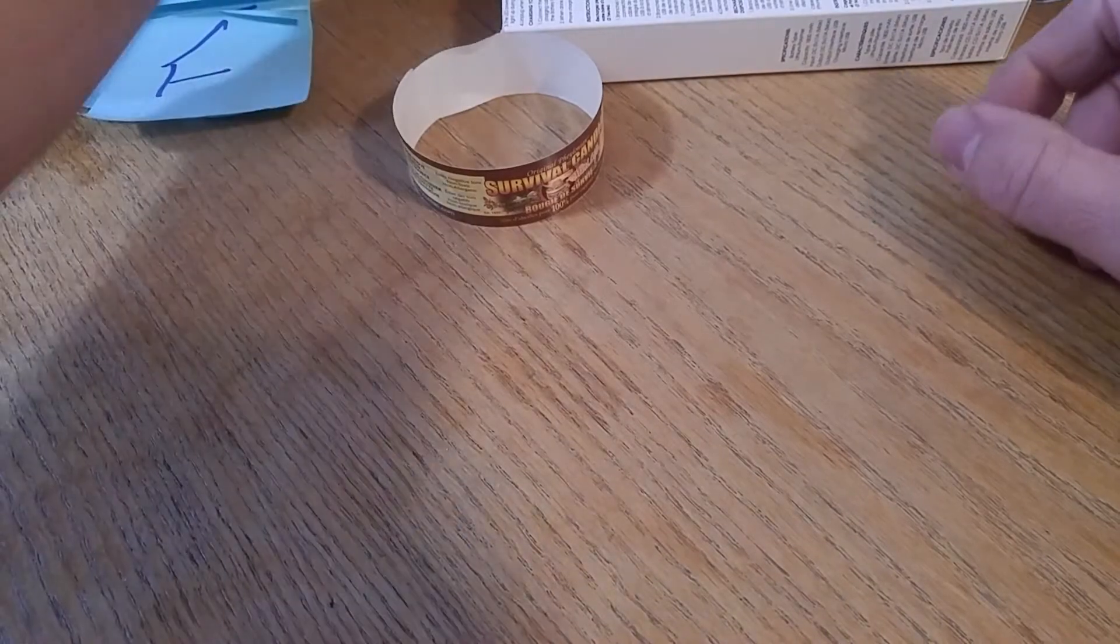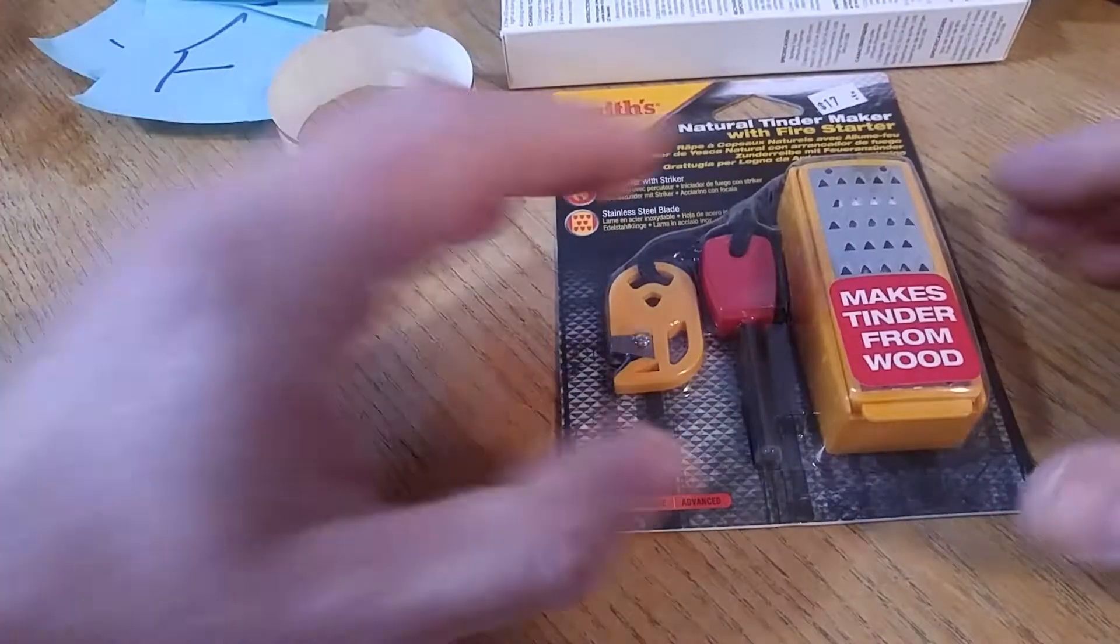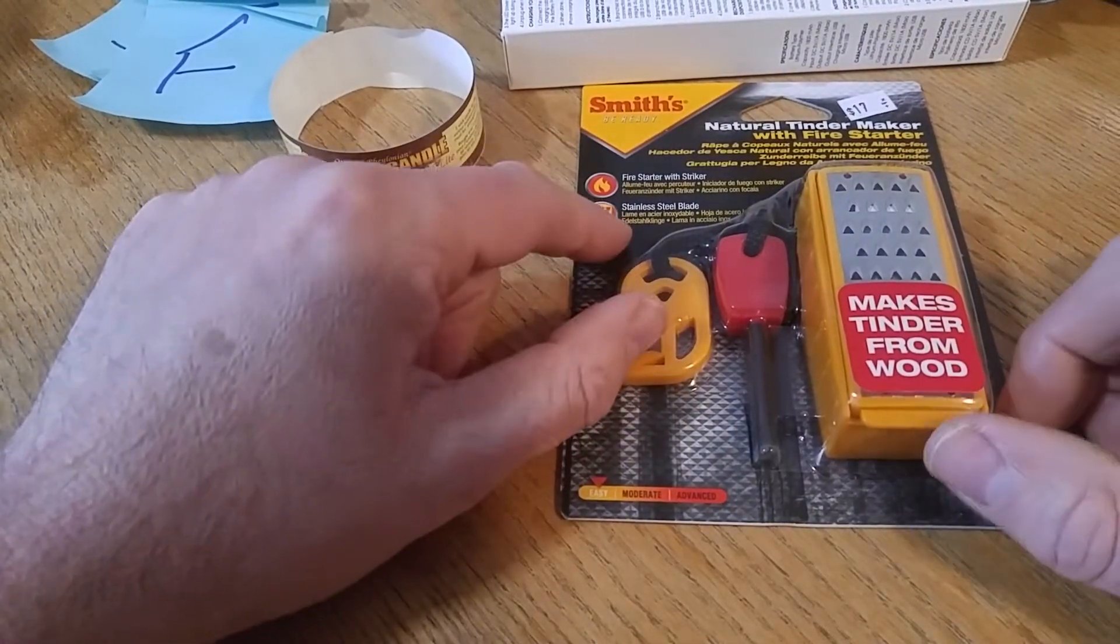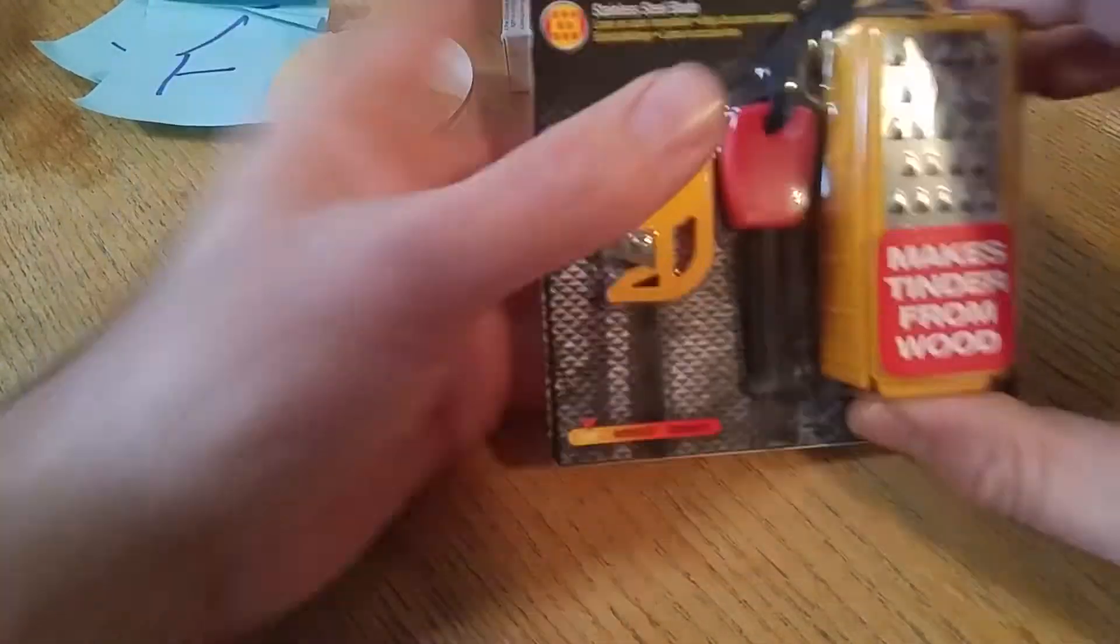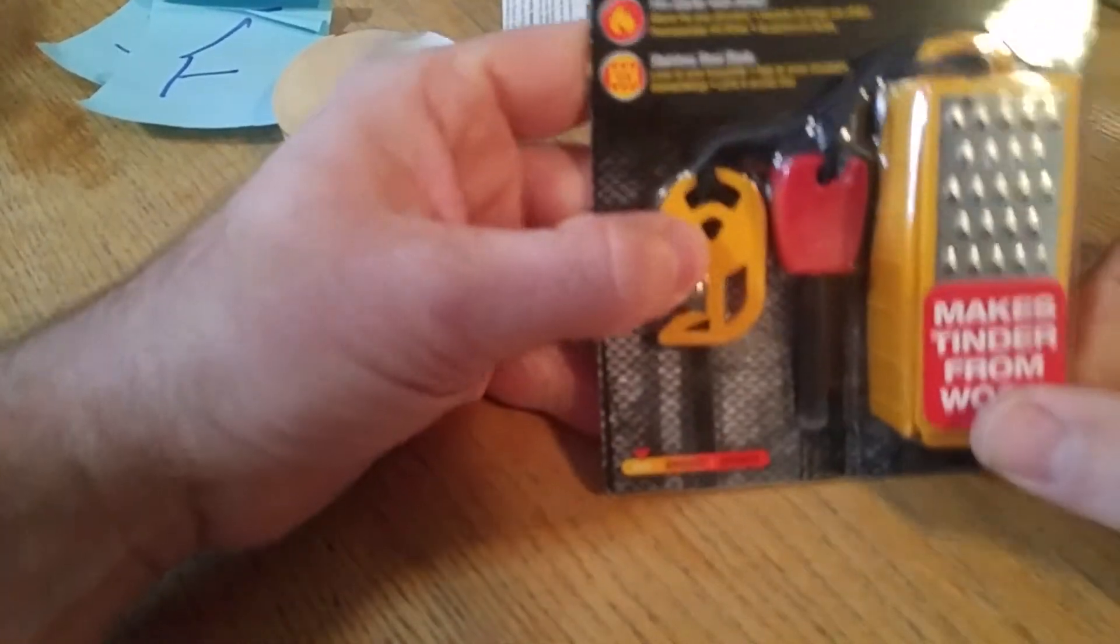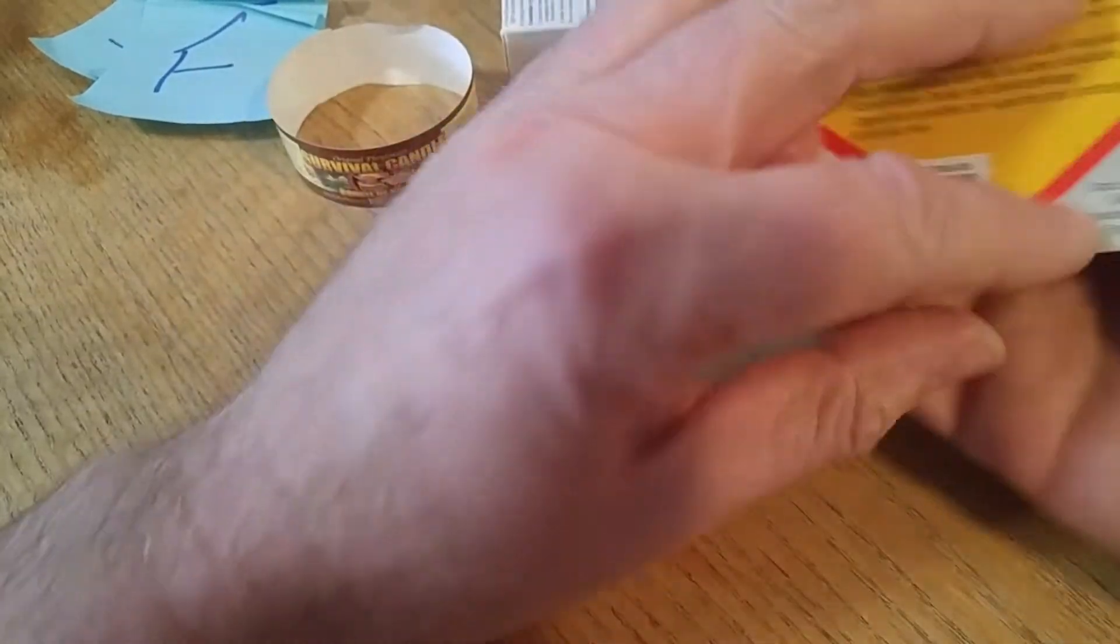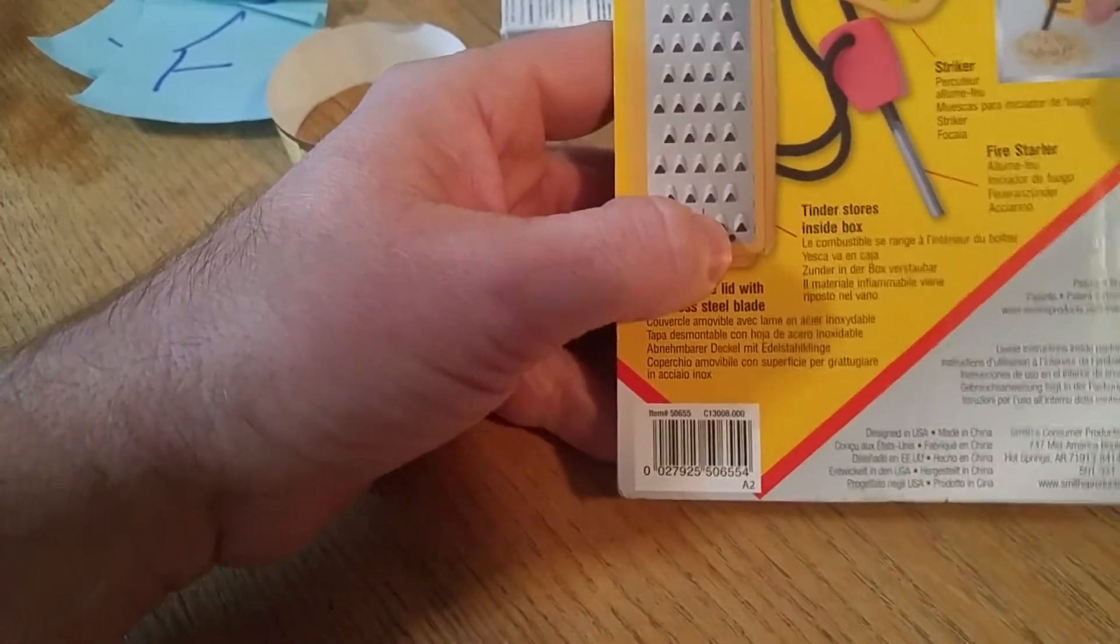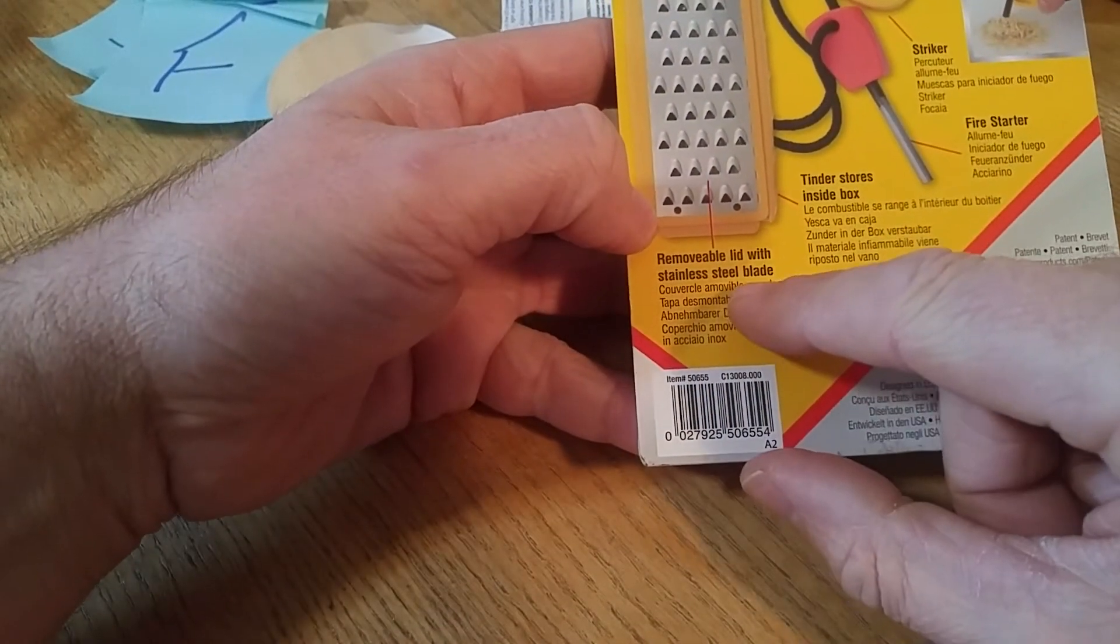Also she went to the Army Navy Surplus Store in Halifax, which I asked her to do, and she picked up this, which I have not seen. It's the Smith's Natural Tinder Maker. So you've got your tinder maker which is like a grater, but it has a little container you keep it in. I haven't opened it yet, I'm going to wait. And the fire striker, and this here. That's your striker, a silly thing. Your fire starter and your tinderbox, removable lid with stainless steel blade.